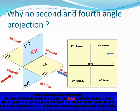In the third quadrant, the observer is here, the plane is in the middle, and the object is behind — as we saw in the comparison between first and third angle projection. The object's front view is placed at the bottom, the top view at the top, and the right side view is placed on the right side. The first quadrant is quite opposite to the third quadrant.